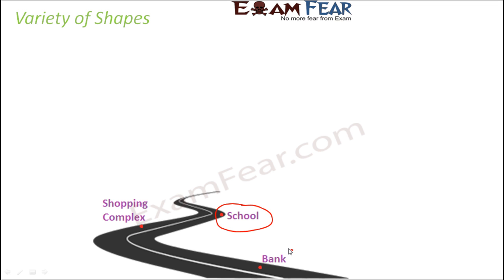You put a dot and say this is where the bank is located, giving an approximate idea of how far the school is from the bank. Similarly, you use a dot to show where the shopping complex is. So what are these dots? These dots are points, and these points specify the location of objects or places.